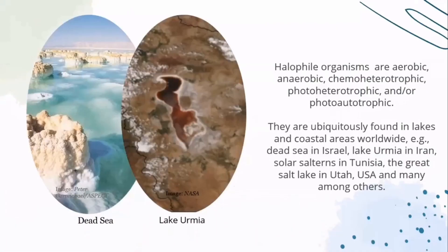Halophile organisms are aerobic, anaerobic, chemoheterotrophic, photoheterotrophic, or photo-autotrophic. They are ubiquitously found in lakes and coastal areas worldwide, such as the Dead Sea in Israel, Lake Urmia in Iran, solar salterns in Tunisia, the Great Salt Lake in Utah, and many others.